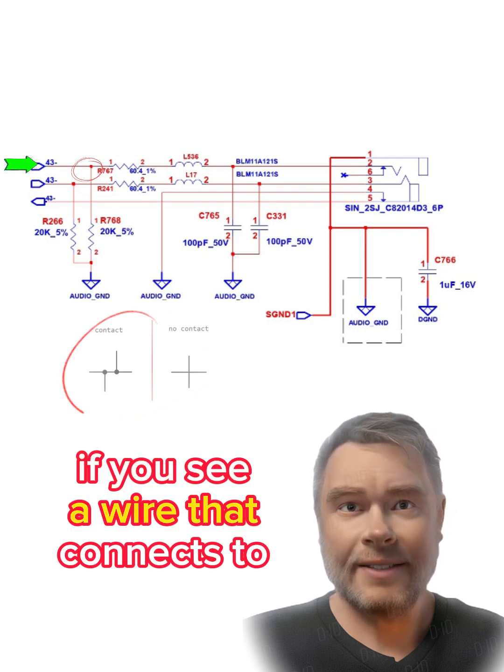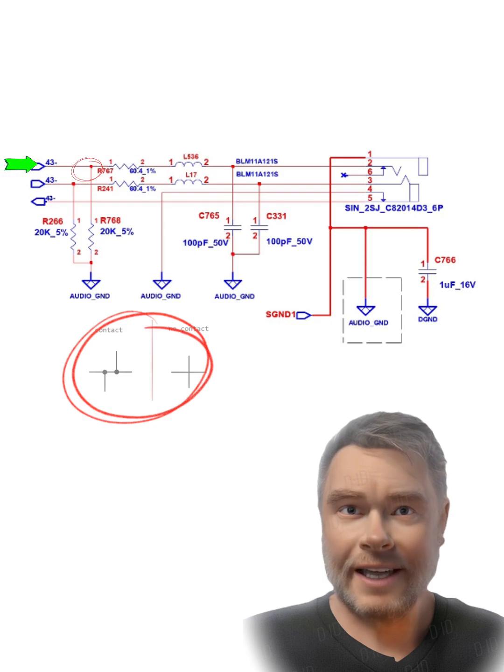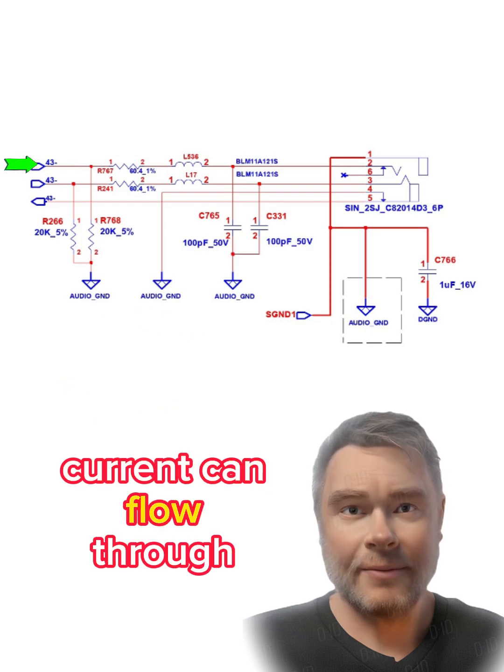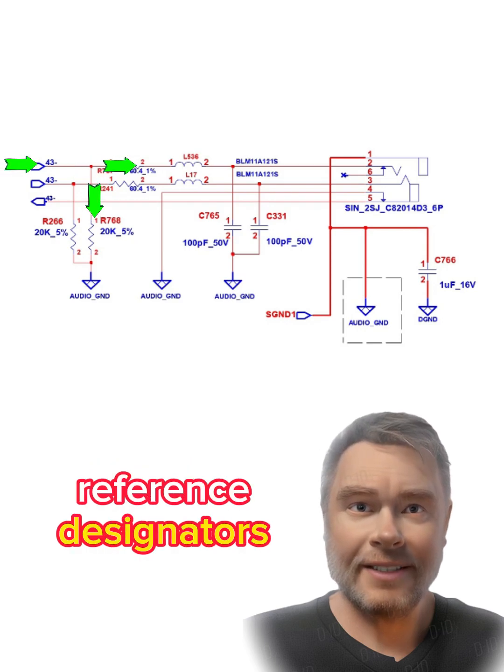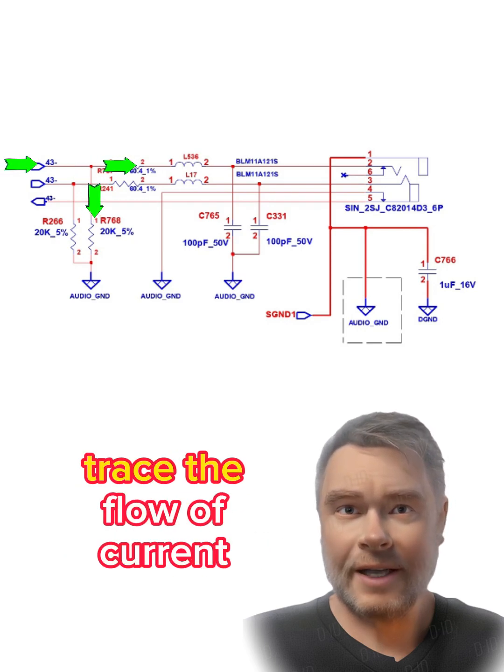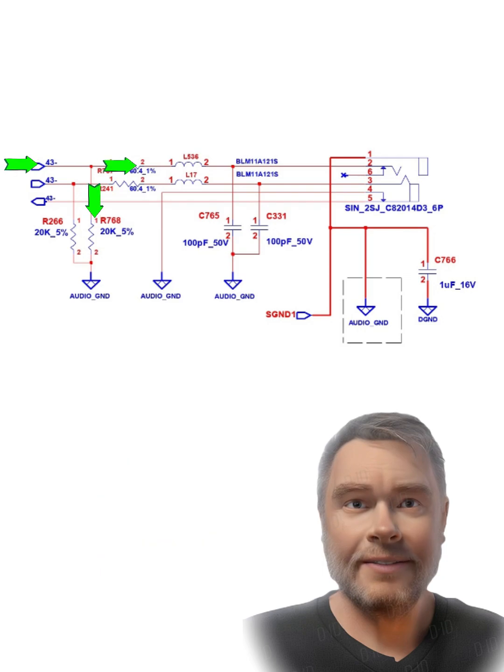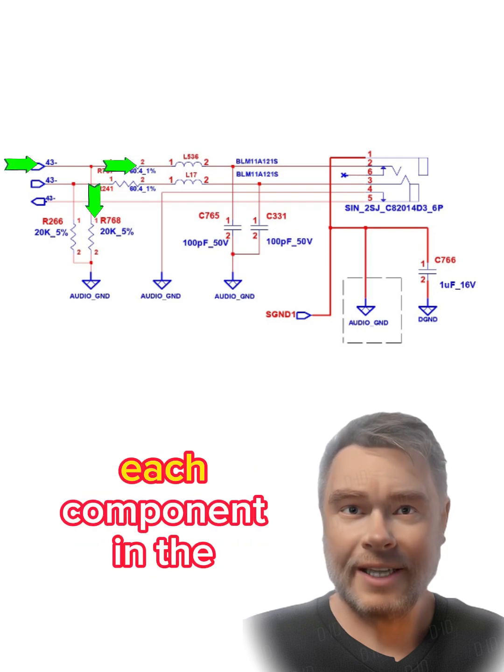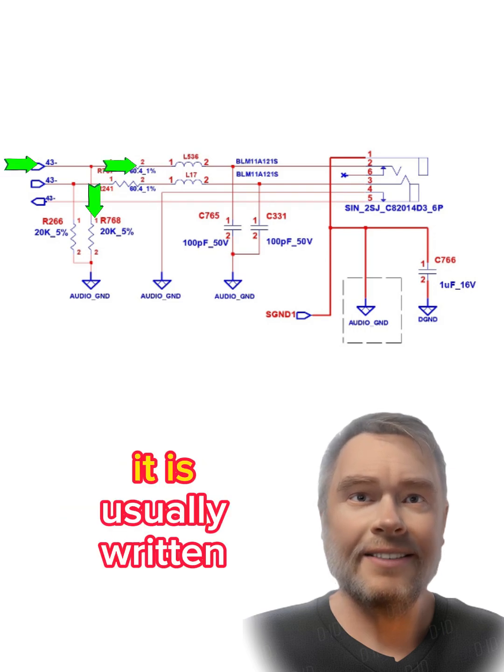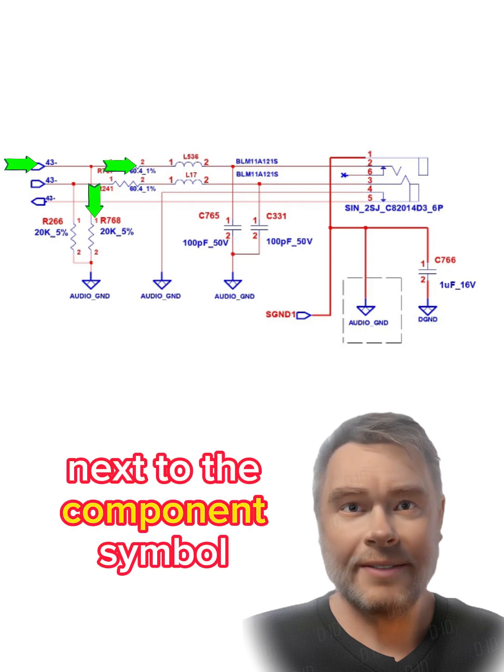If you see a wire that connects to two different components, then that means that current can flow through both components. You can also use the reference designators of the components to help you trace the flow of current. The reference designator is a unique identifier for each component in the circuit. It is usually written next to the component symbol.